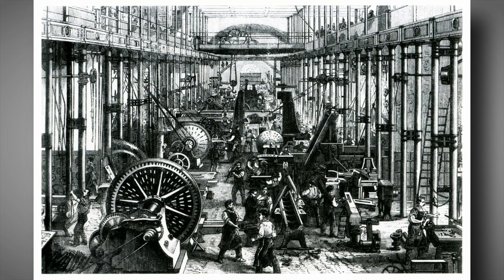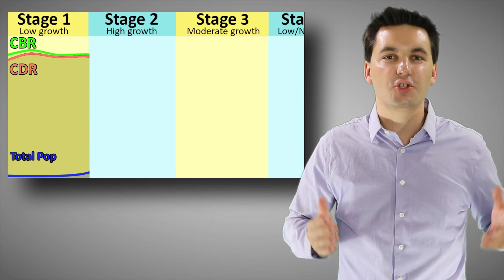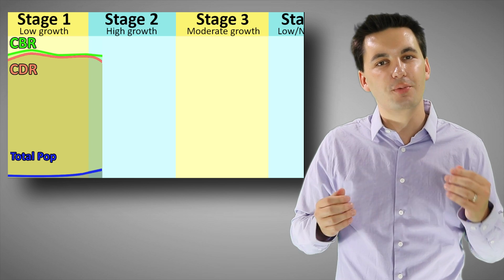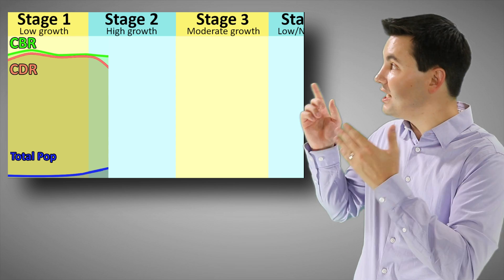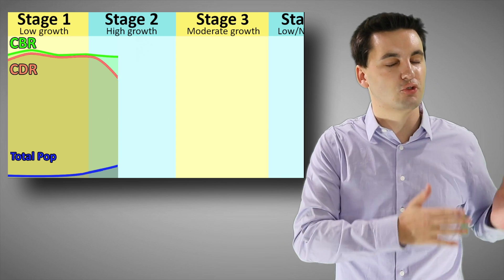Countries move from stage one to stage two when either the industrial revolution or the medical revolution happens. Regions like Europe and North America were the first to experience stage two, thanks to the industrial revolution, followed by Africa, Asia, and Latin America, thanks to the medical revolution. Stage two is defined by high growth. When countries enter stage two, they keep their high birth rate — they're still having a lot of babies.